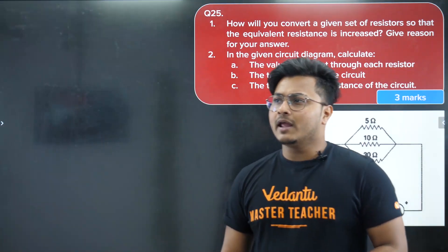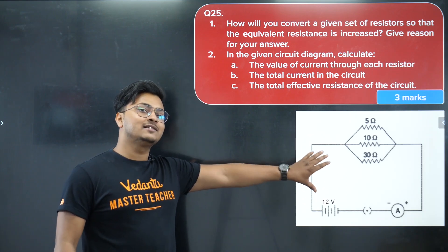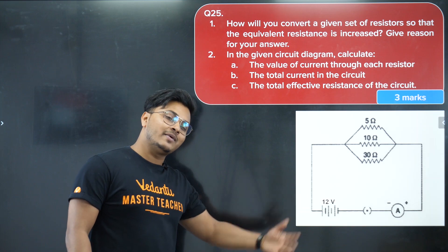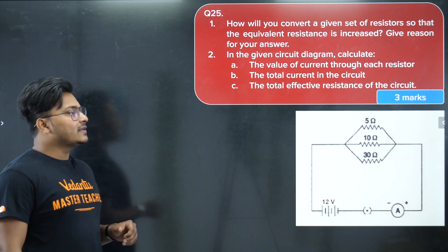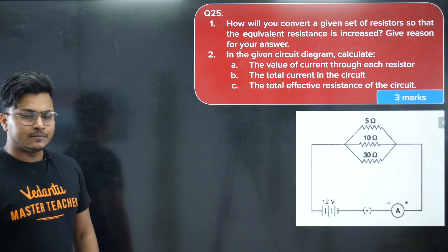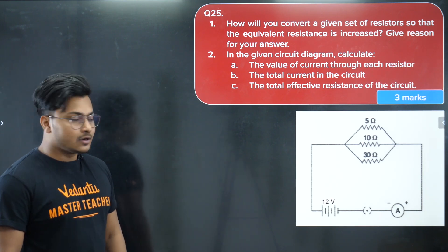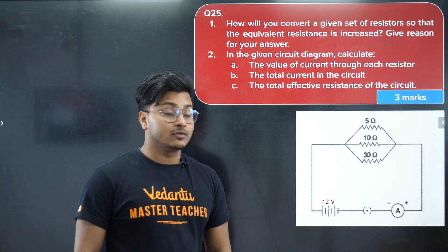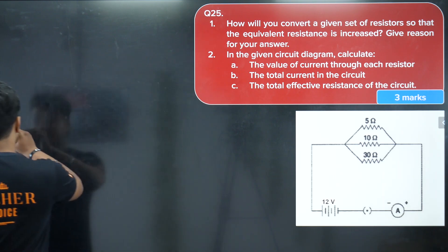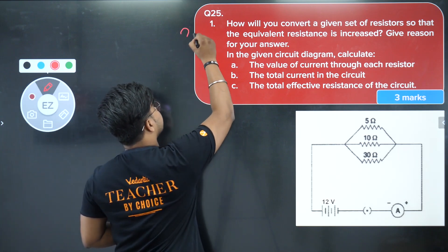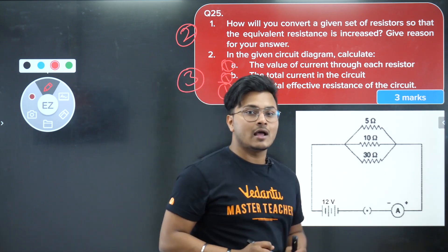Moving on to the third question — from electricity — a very common CBSE Class 10 question combining Ohm's law and resistance. It asks: how will you convert a given set of resistors so that the equivalent resistance is increased? Give reasons. Then calculate the value of current through each resistor, the total current in the circuit, and the total effective resistance. This is a 5 mark question — 2 marks for the first part and 3 marks for the second part, one mark each.